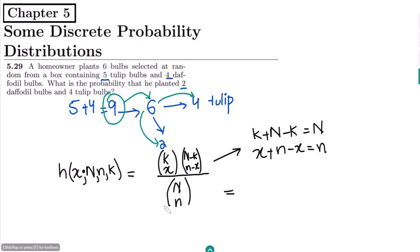Let us identify the elements we have here. N is 9, and the selected bulbs are 6, so small n is 6. The first class k is the five tulip bulbs, so k equals 5, and x — the number of tulip bulbs to select — is 4. The remaining ones are n minus k, so 9 minus 5 equals 4, which are the four daffodil bulbs, and n minus x is 6 minus 4, which equals 2 daffodil bulbs.